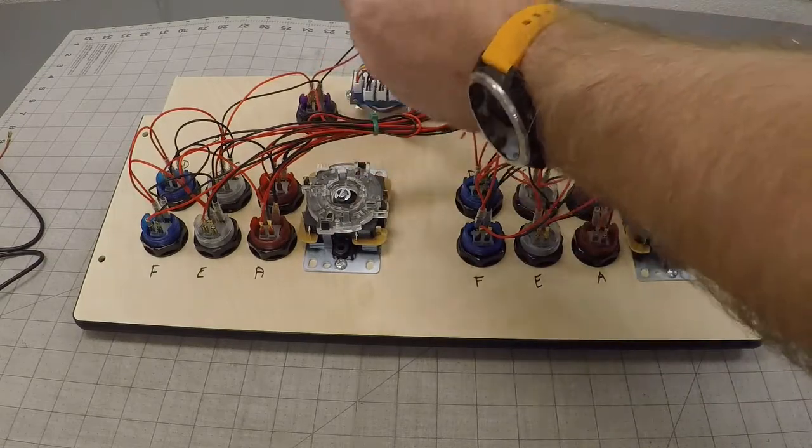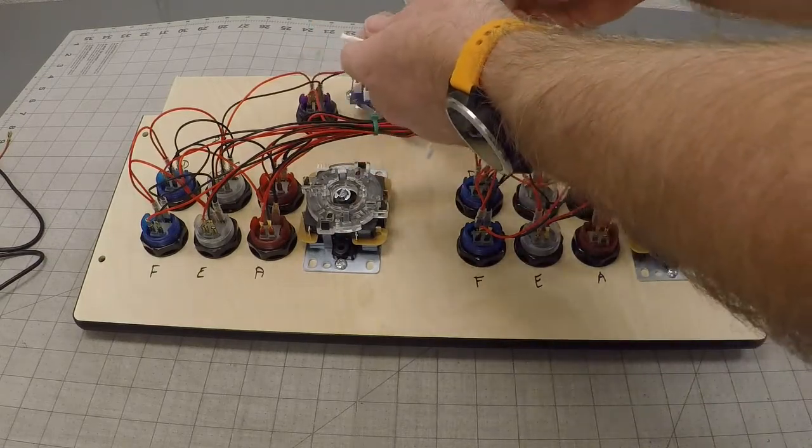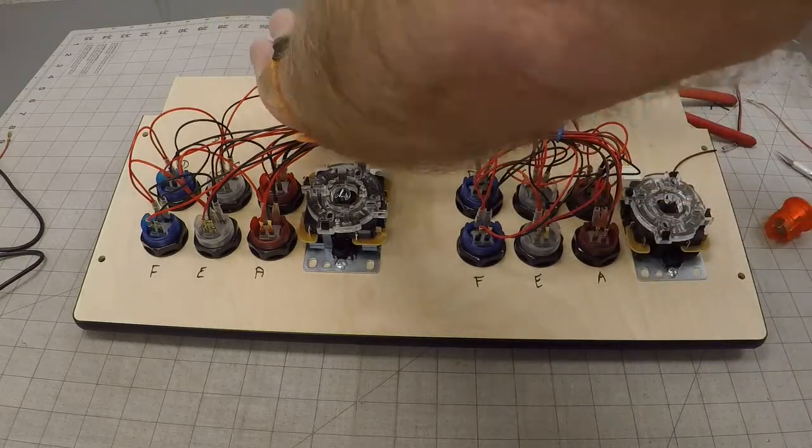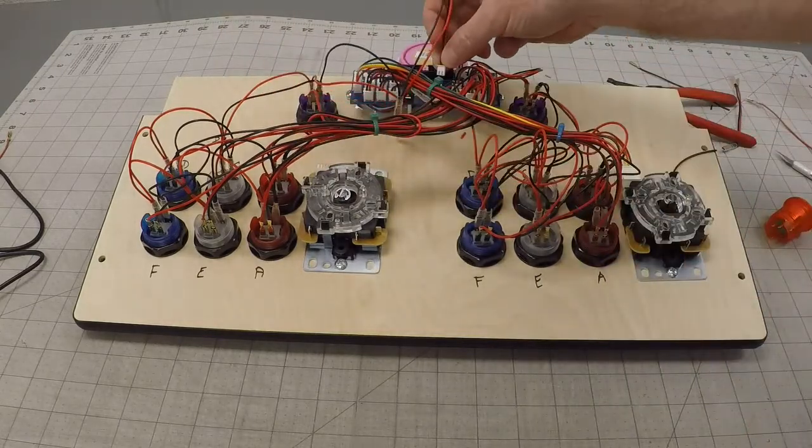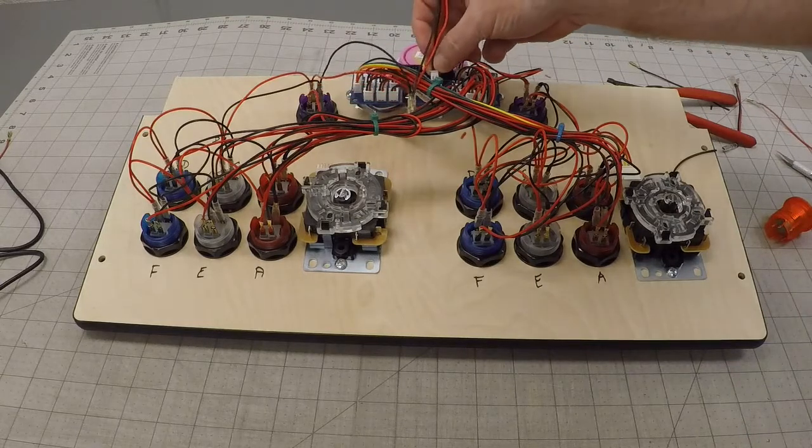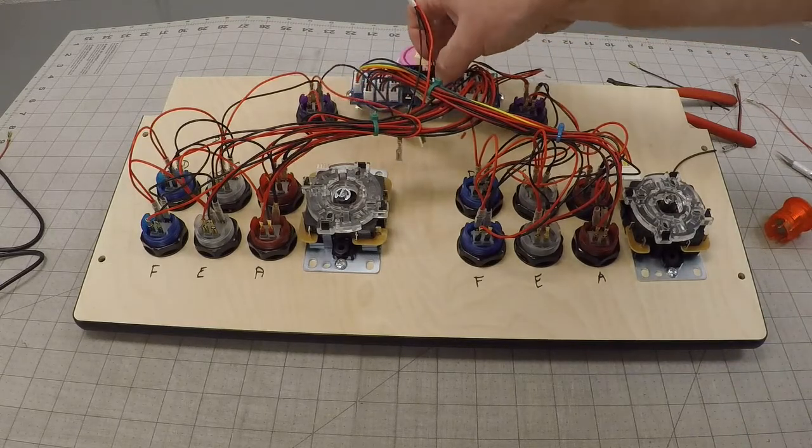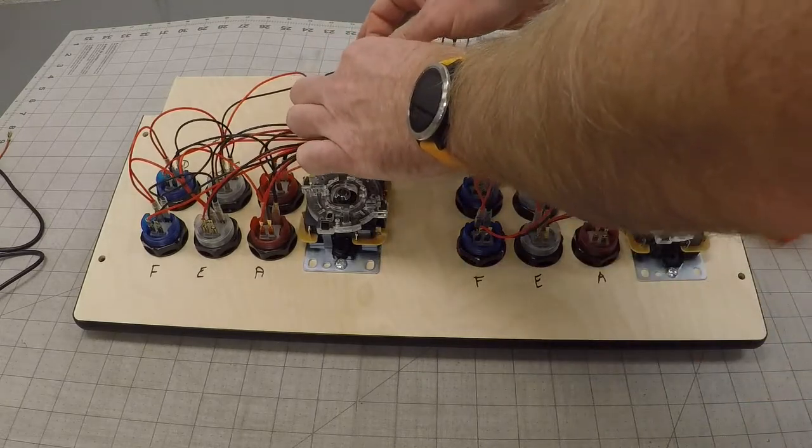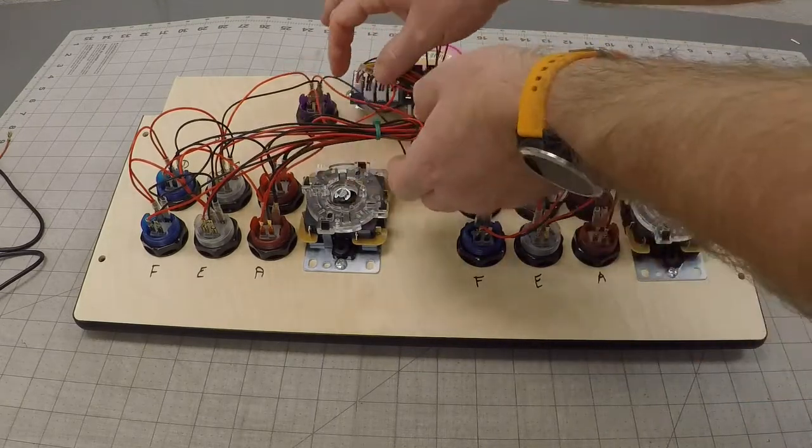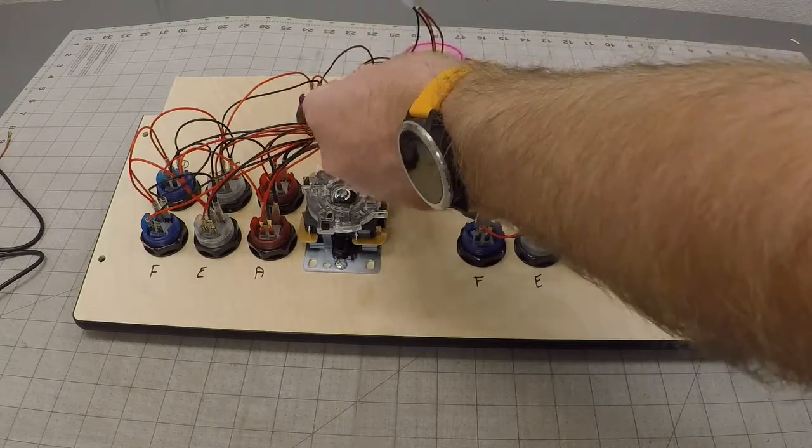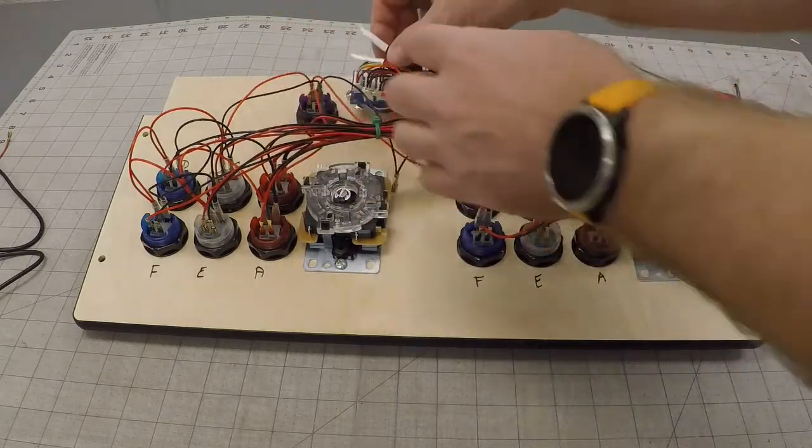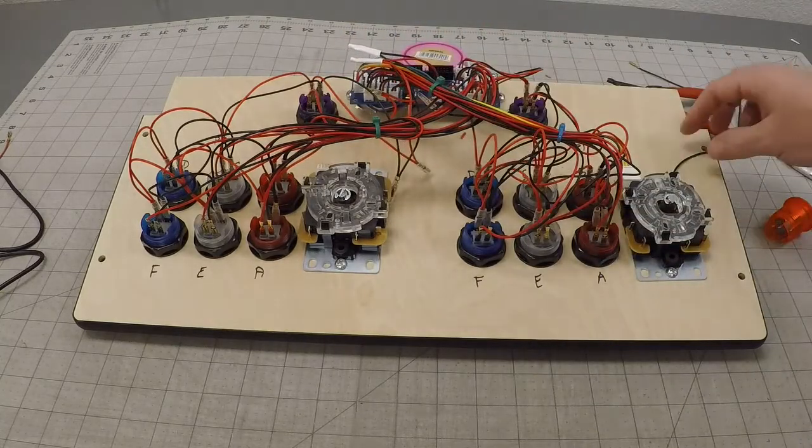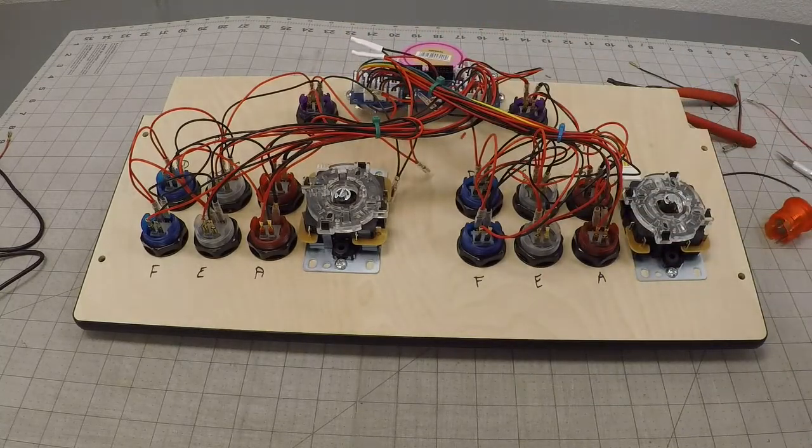And simply take this wire right here, and plug it into the 12-volt out one, which is right there. You may want to take and tape these up. Anyone that are laying free, you may want to tape them up. It just depends on how clean you want it. It's better to do it anyway. That way they don't accidentally touch and short out.